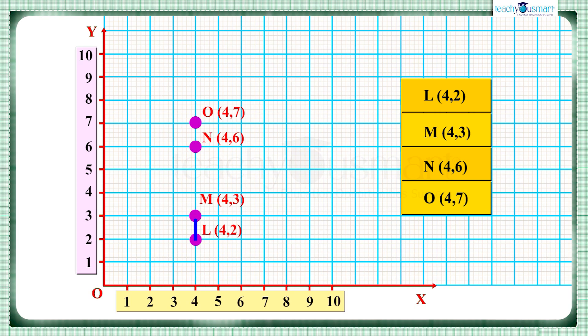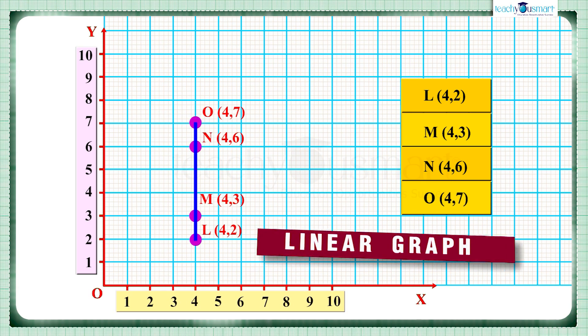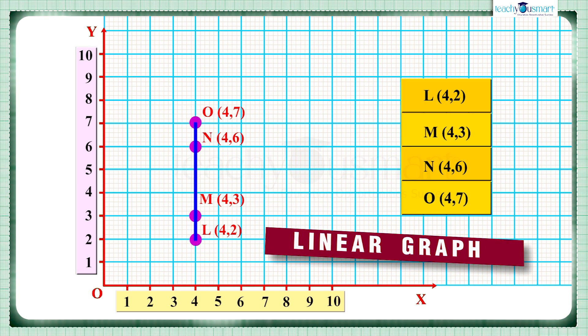Join these points by line segments. Here all the points lie on the same line, so we get a linear graph. That is, the points L (4,2), M (4,3), N (4,6), and O (4,7) form a linear graph.